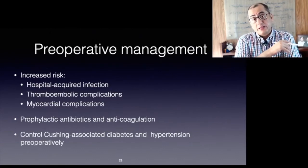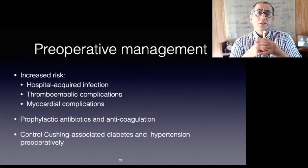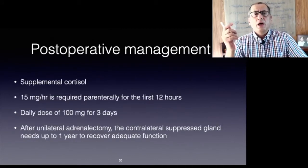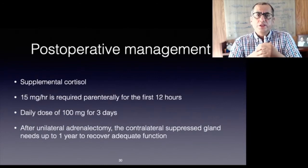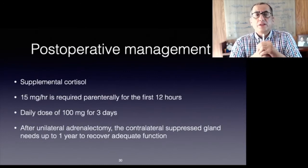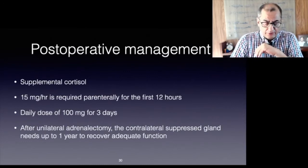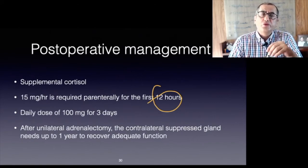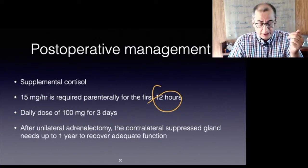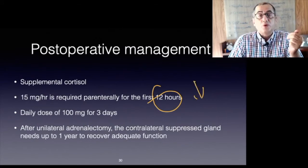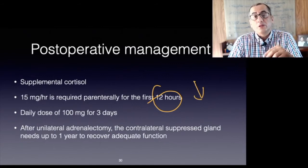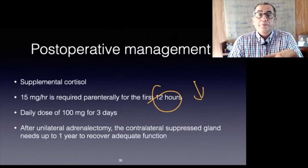Cushing's-associated diseases such as diabetes and hypertension must be controlled medically pre-operatively. Supplemental cortisol should be given after surgery — approximately 15 mg/hour for the first 12 hours, followed by a daily dose of 100 mg for three days, which is then gradually tapered off.